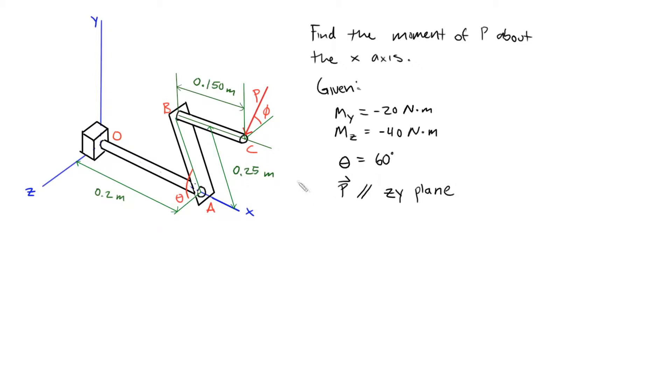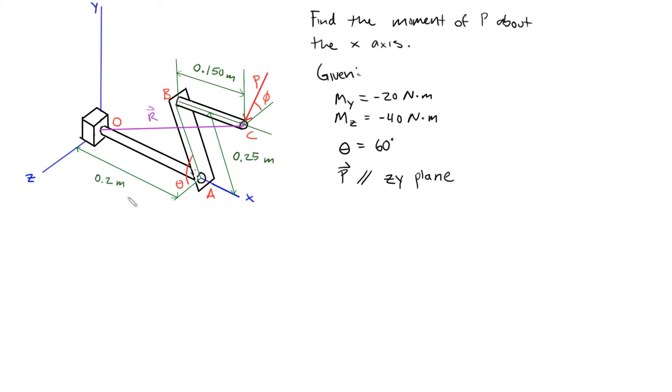Now that we have that defined, we can actually start doing this problem. What we're going to do is define the position vector from O to C, and we'll use that to find the moment of P about O. We're going to define this as R, and we're going to define P as we go along.